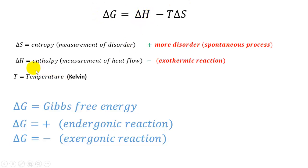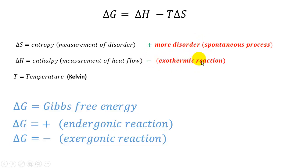First, delta H is something we've studied before — that's enthalpy. It's a measurement of heat flow. If delta H is negative, that means heat is liberated and the reaction is going to go forward to products. We call that an exothermic reaction.